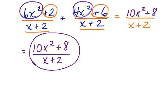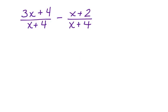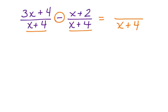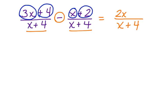Let's look at another example with a common denominator before we look at how to handle one with an uncommon denominator. Here's another example. Notice right away that x plus 4 is our common denominator. We can bring that right over into our solution. This is a subtraction problem, so we have to apply that. Let's take care of the like terms. 3x minus x leaves us with 2x, and we have 4 minus 2, which leaves us with a positive 2. Our final answer is 2x plus 2 over x plus 4.